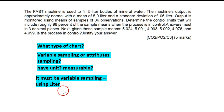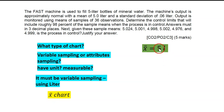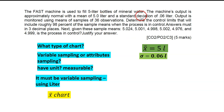The control chart and formula we're going to use is the X-bar chart. For the X-bar chart, we need X-bar-bar, which here is 5 liters, sigma is 0.06 liters, and n is 36.